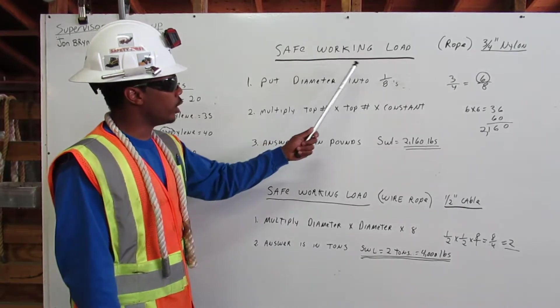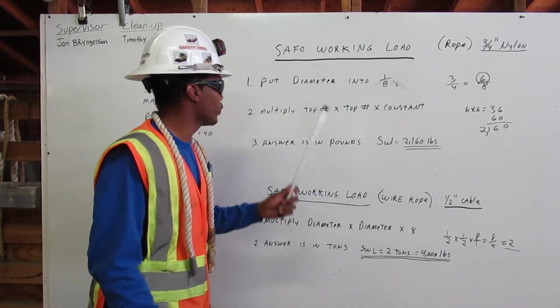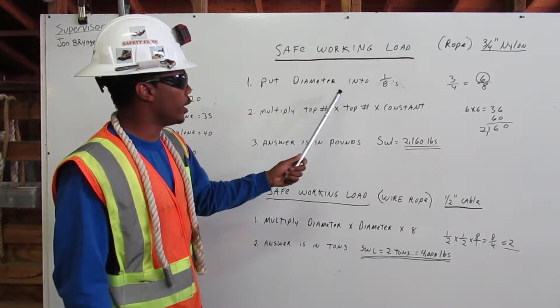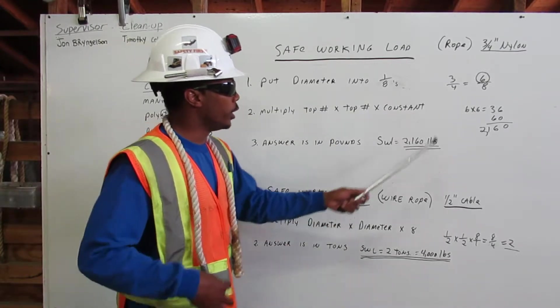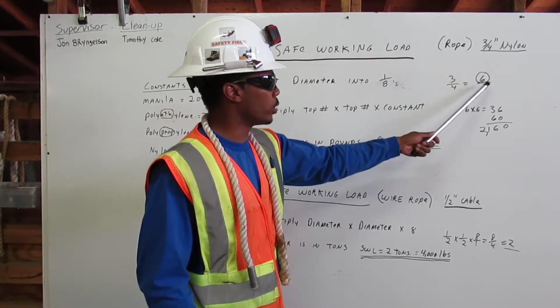Safe working load for rope, three-quarter inch nylon. First, put diameter into eighths. Here, three-quarter inch nylon equals 6/8. We circle the six.